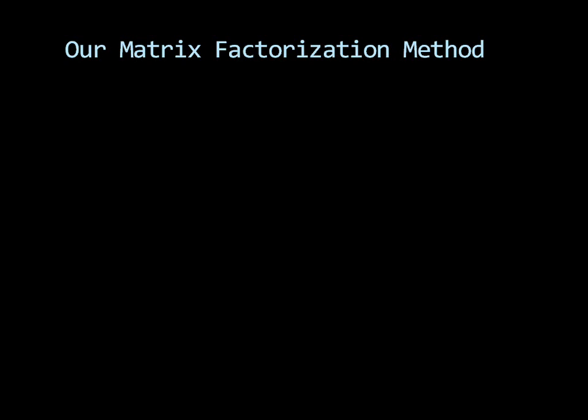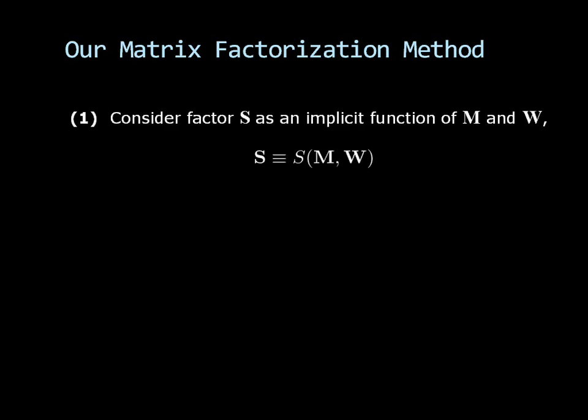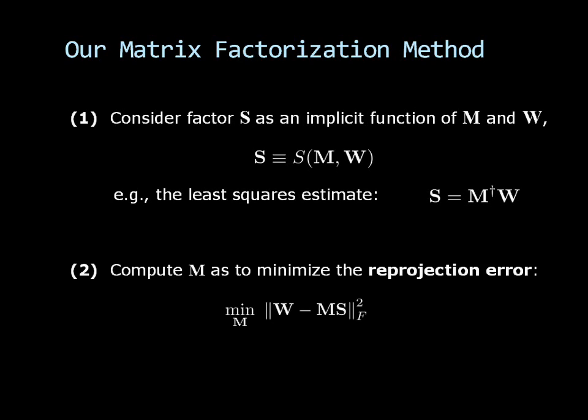To estimate the parameters in our model, we use the following matrix factorization method. First, we consider factor S as an implicit function of M and W. For example, the least squares estimate of S defined in terms of W and the pseudo inverse of M. Therefore, the solution we seek is defined in terms of factor M alone. In the second step, we compute factor M to minimize the reprojection error as shown here. This is done using a Gauss-Newton optimization algorithm.